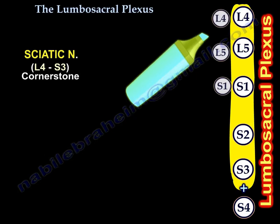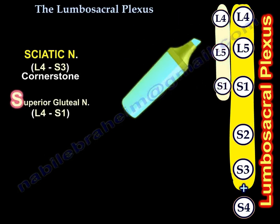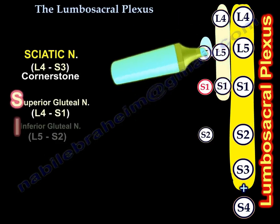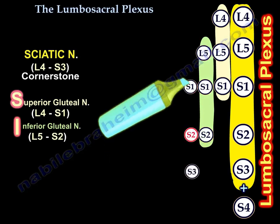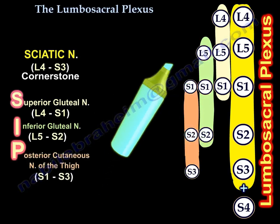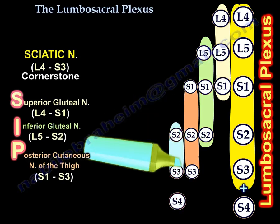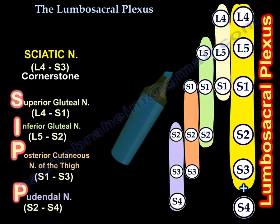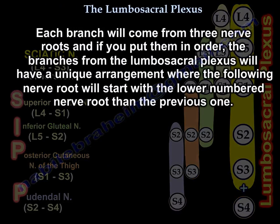There are four branches: the superior gluteal nerve, the inferior gluteal nerve, the posterior cutaneous nerve of the thigh, and the pudendal nerve. Each branch arises from three nerve roots. If you put them in order, the branches of the lumbosacral plexus follow a unique arrangement where each successive branch starts with one nerve root lower than the previous one.